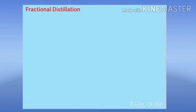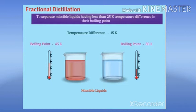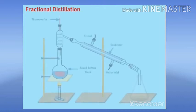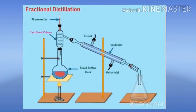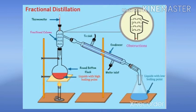Fractional distillation. This method is used to separate miscible liquids having less than 25 Kelvin temperature difference in their boiling points. The apparatus is similar to simple distillation; only a fractional column is added between the distillation flask and the condenser. Due to the low difference in boiling point, both liquids evaporate simultaneously and face obstructions in the fractional column. Due to obstructions, the liquid with a high boiling point condenses back into the flask, and the liquid with a low boiling point reaches the condenser and is collected in a container. Hence the liquids get separated.